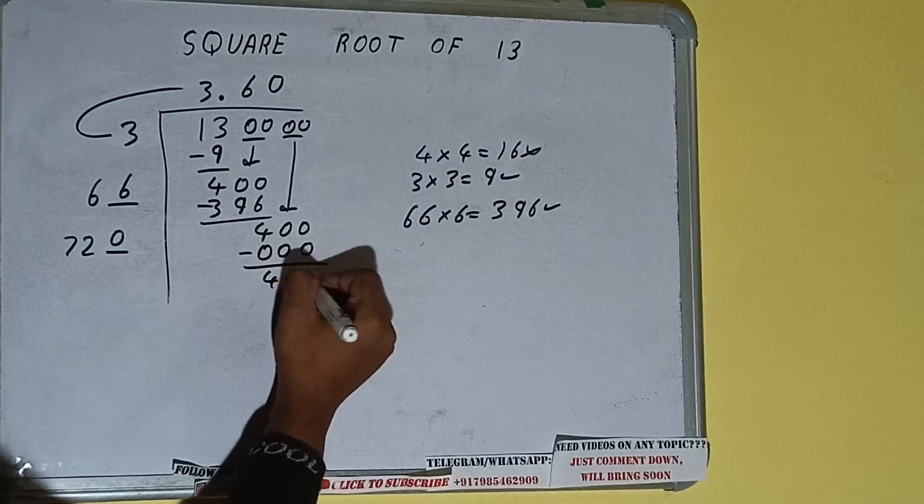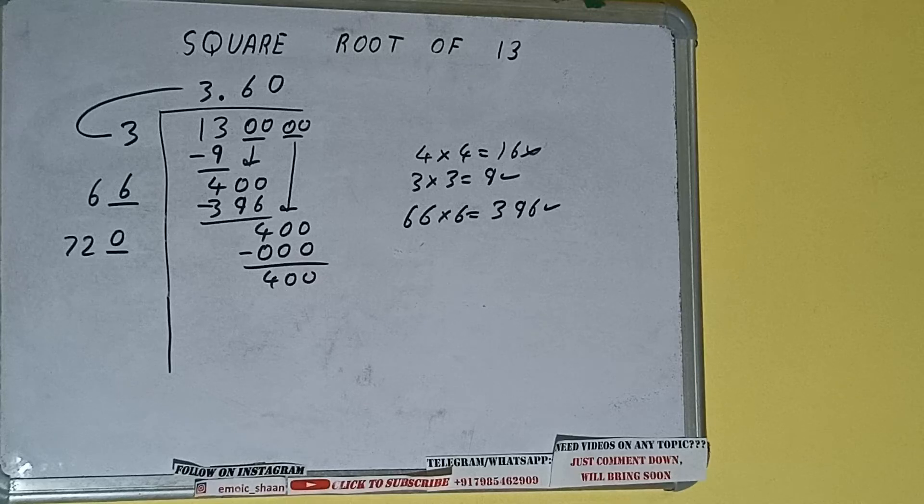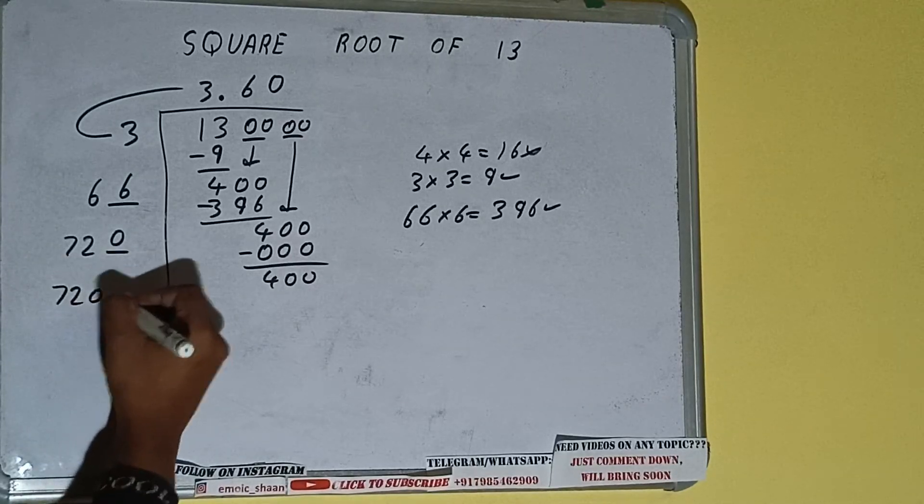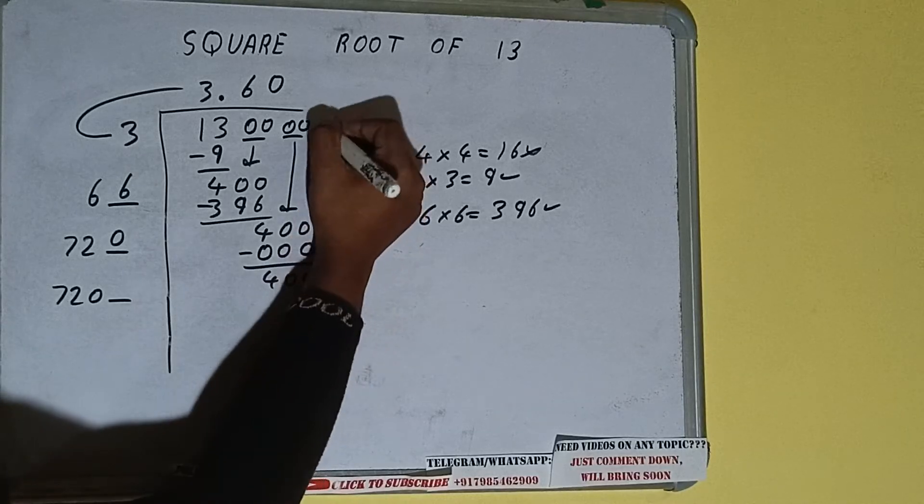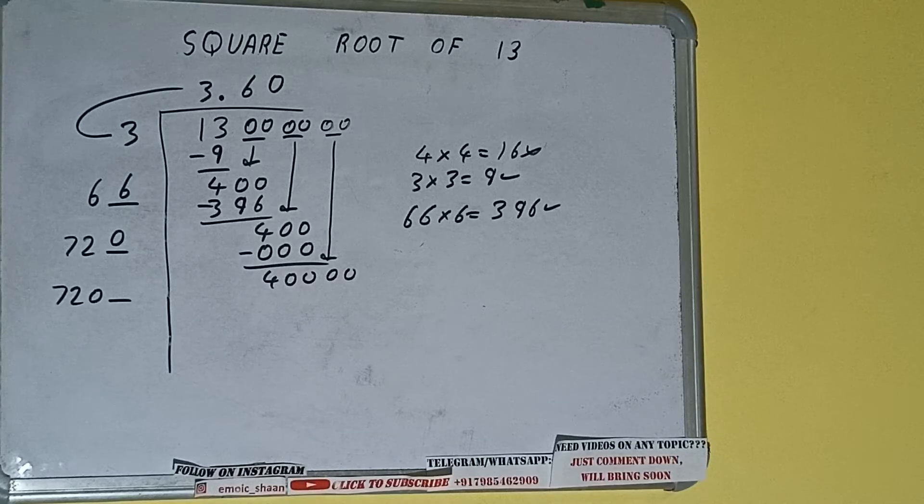400. So add both. So 720 plus 0 will be once again 720, but 1 digit extra. And this number we need to make it big, so bring the next pair of zeros down and it will be 40,000.